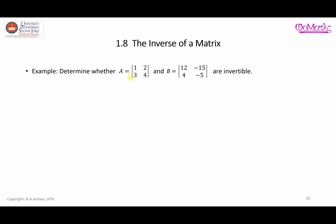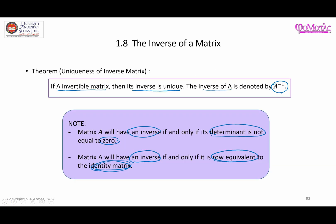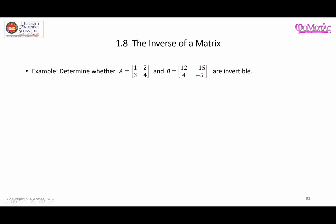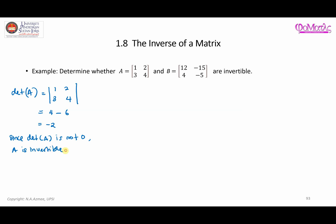As an example, we have matrices A and B and we're going to determine whether they are invertible. There are two ways: checking the determinant, and checking row equivalence to the identity matrix. Starting with the determinant: det(A) for the matrix [1,2;3,4] is 4 minus 6, which equals -2. Since det(A) ≠ 0, A is invertible.